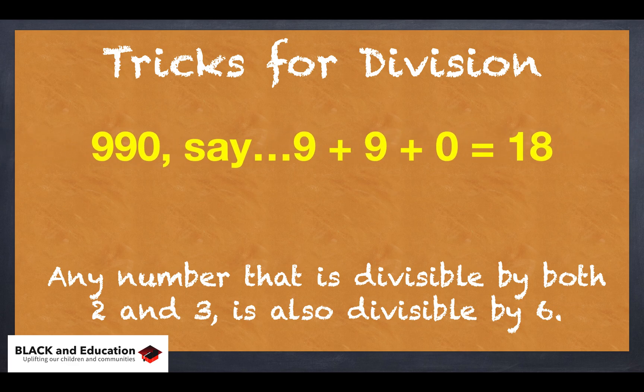Let's take a look at that. Say we have the number 990, and I want to see if that's divisible by 6. Well, first of all, it's immediately divisible by 2 because it ends in 0. And if I want to check if it's divisible by 3, I add up its digits. So 9 plus 9 plus 0 equals 18,